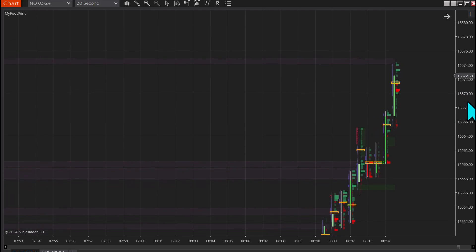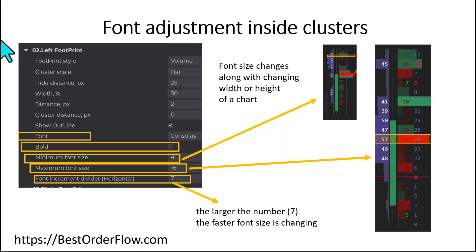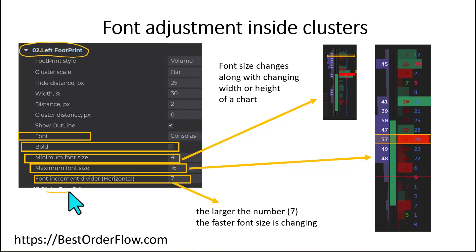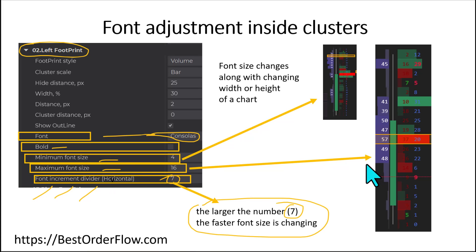There are now no numbers on the left or right side of the footprint, and we achieve this with options under section 2. We can fine-tune when the font will be hidden and choose the font increment divider rate — how fast the font changes. Currently it is 7. We can choose the font type (currently Consolas), select boldness, maximum font size, minimum font size, and fine-tune the way numbers are displayed on the clusters.